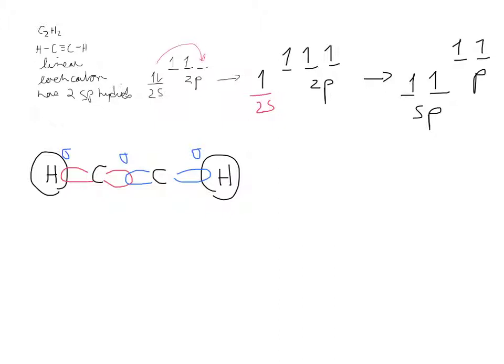Then we want to write it again, put in the SP hybrids. And now we want to focus on the unhybridized p orbitals, and you get two for each carbon. Here's one,